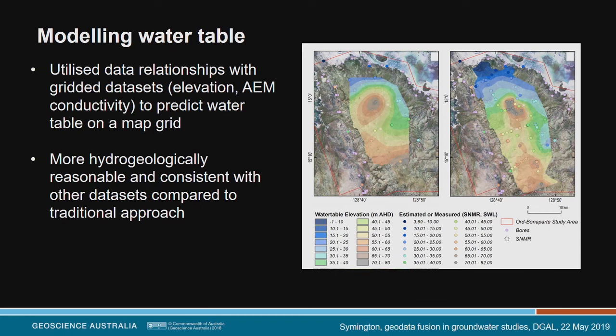Following this process we had water table estimates at both boreholes and SNMR sites — quite a lot of information. We then employed spatial predictive modelling using strong relationships with elevation data and airborne EM to predict water table across our grid. Our interpreters much preferred the resulting model compared to what we would have achieved with the traditional approach, because it was more in line with their expectations and understanding of the system. The map produced using only traditional kriging from standing water levels is clearly less hydrogeologically realistic than the one employing all the SNMR data, standing water levels, and gridded products together.